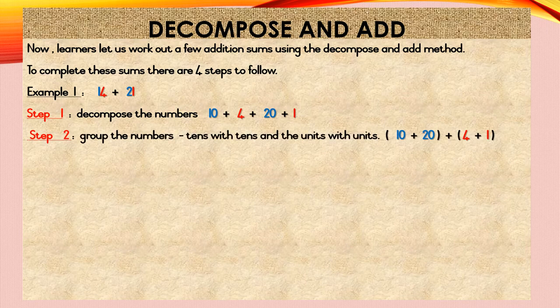Step 2: Group the numbers — that is the tens with the tens and units with the units. You will notice there are two sets of brackets. The first set of brackets is for your tens number and the second set of brackets is for your units number. So in your tens group you will have 10 plus 20, and in your unit group you will have 4 plus 1. So step 2 will read (10 plus 20) plus (4 plus 1).